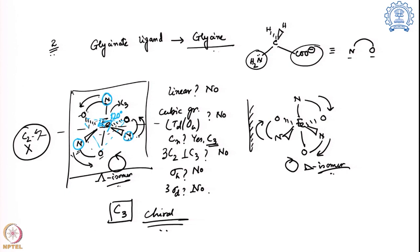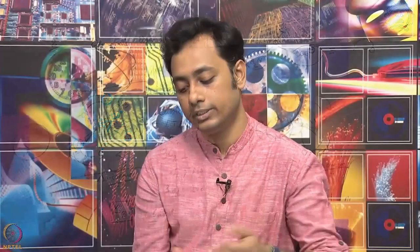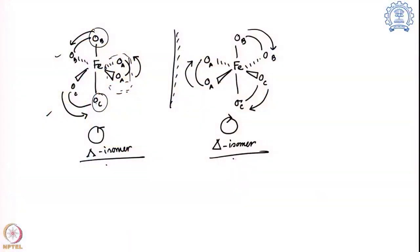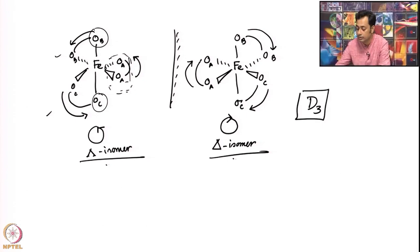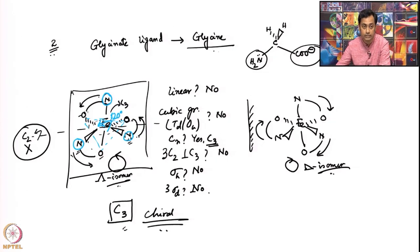The difference between glycinate and oxalate is that glycinate has two different coordination atoms (N and O), which lowers the symmetry to C3, whereas iron oxalate belongs to the higher symmetry D3 point group. D3 has three additional C2 axes perpendicular to C3 that are absent in the glycinate case.